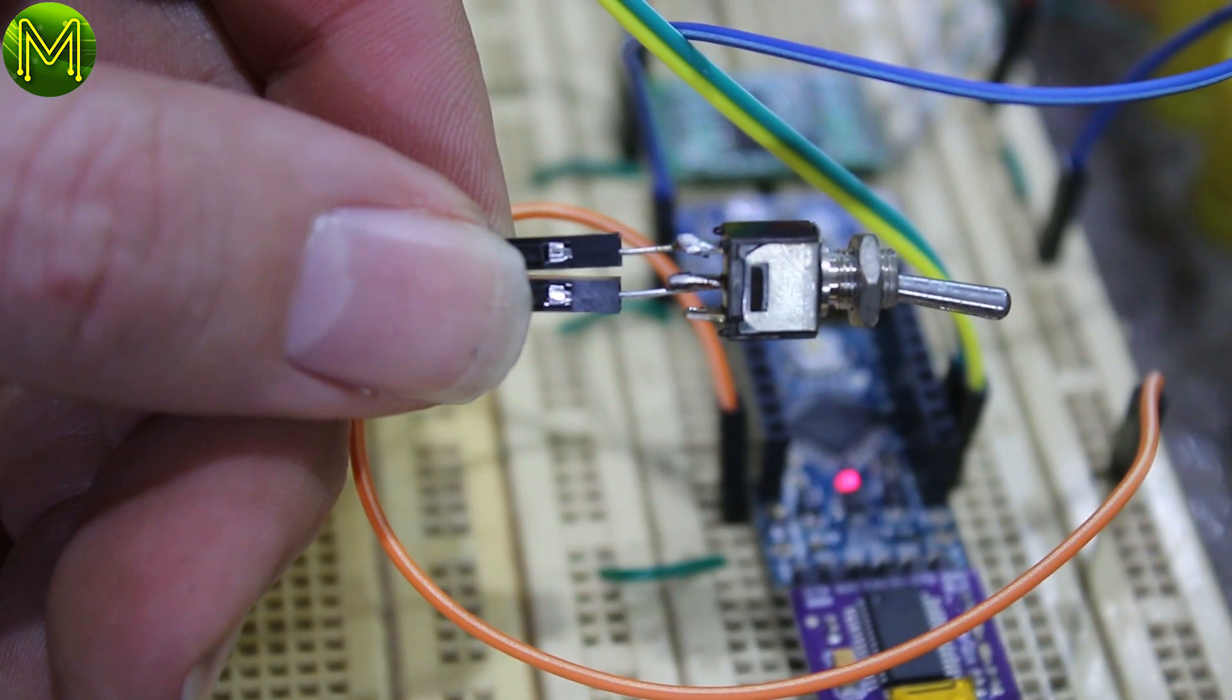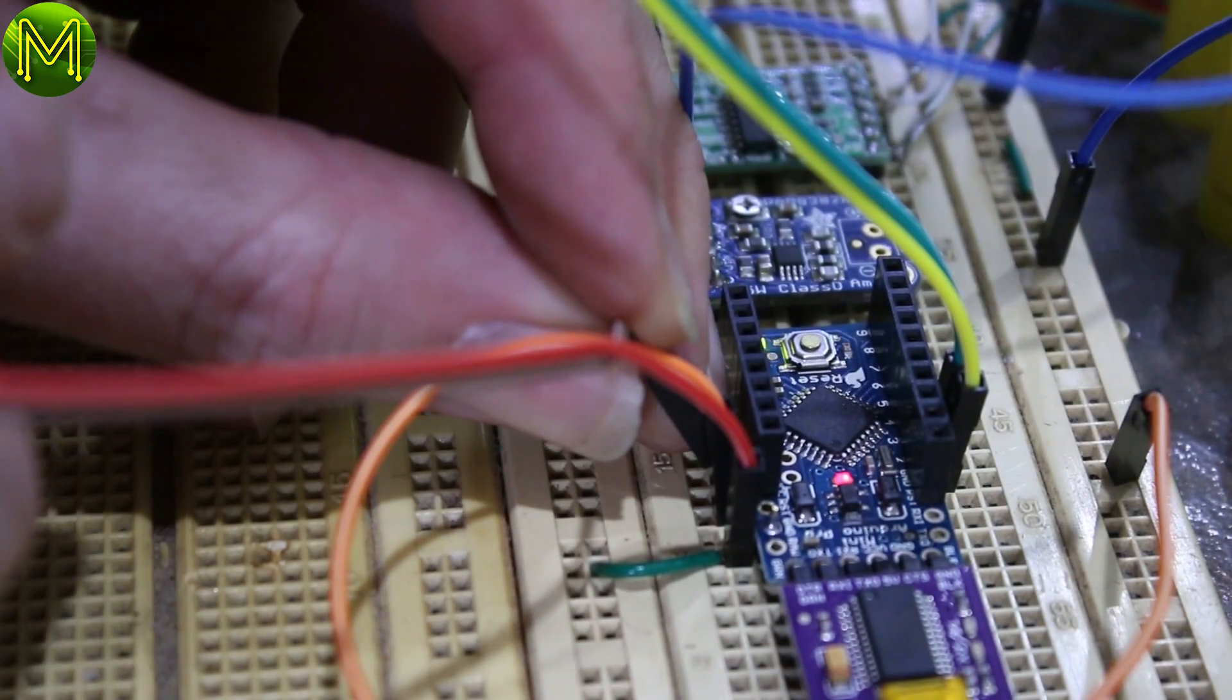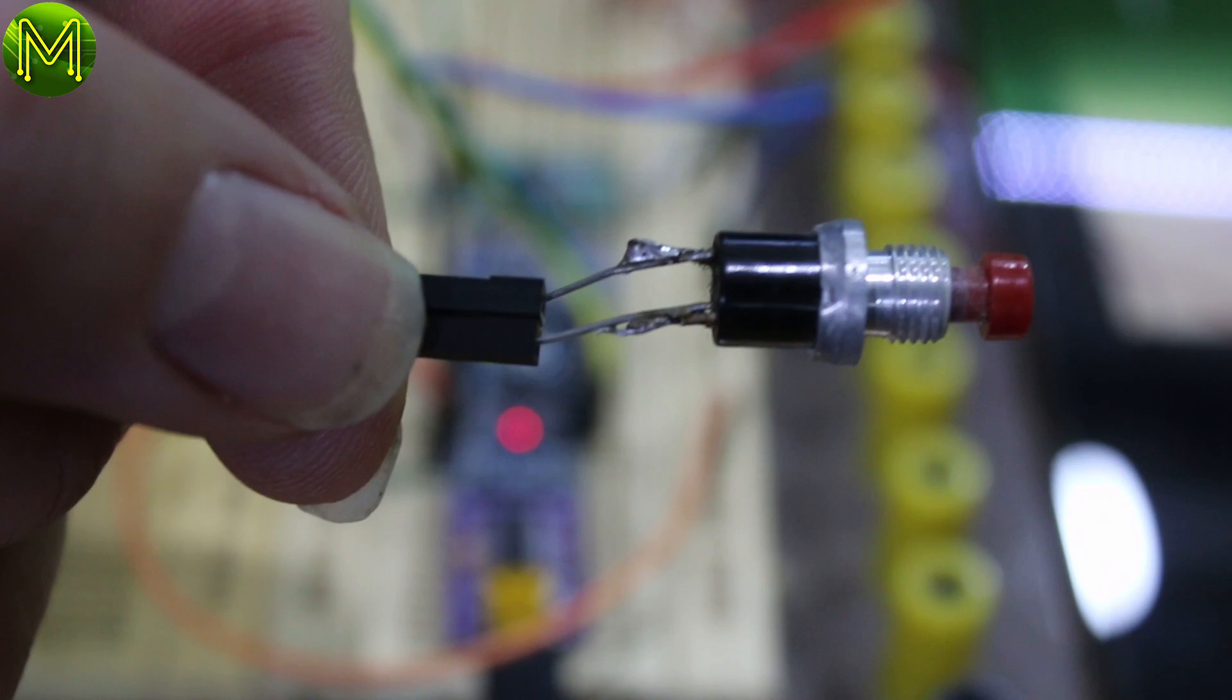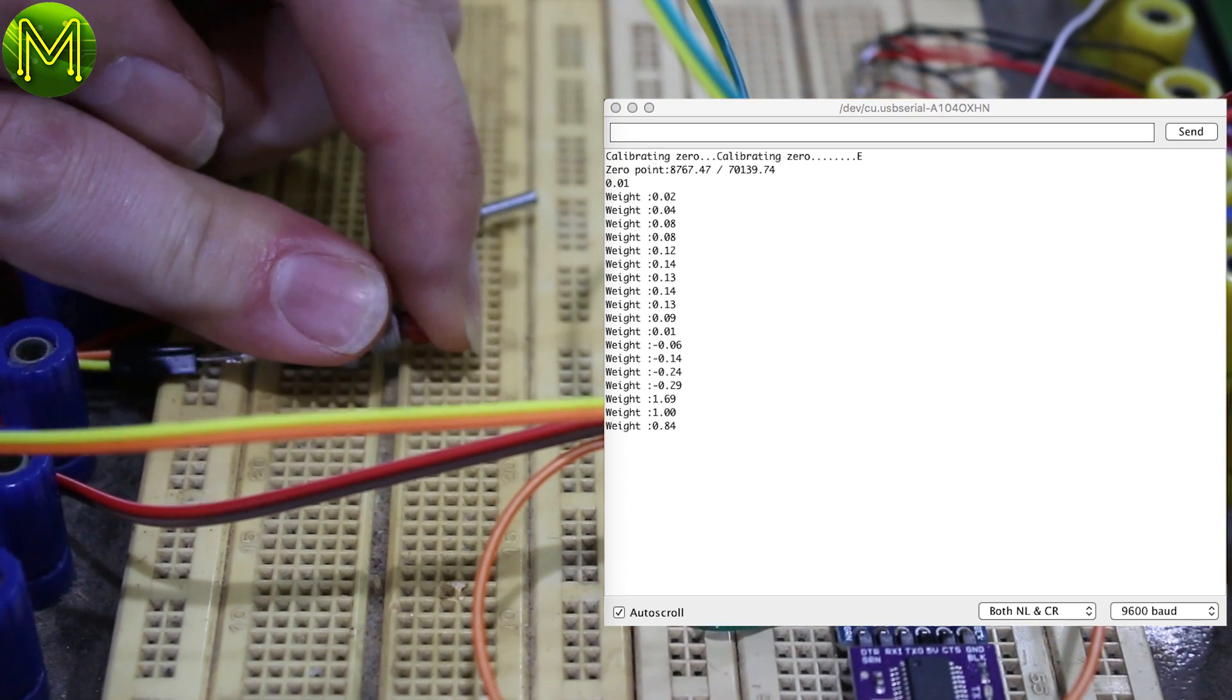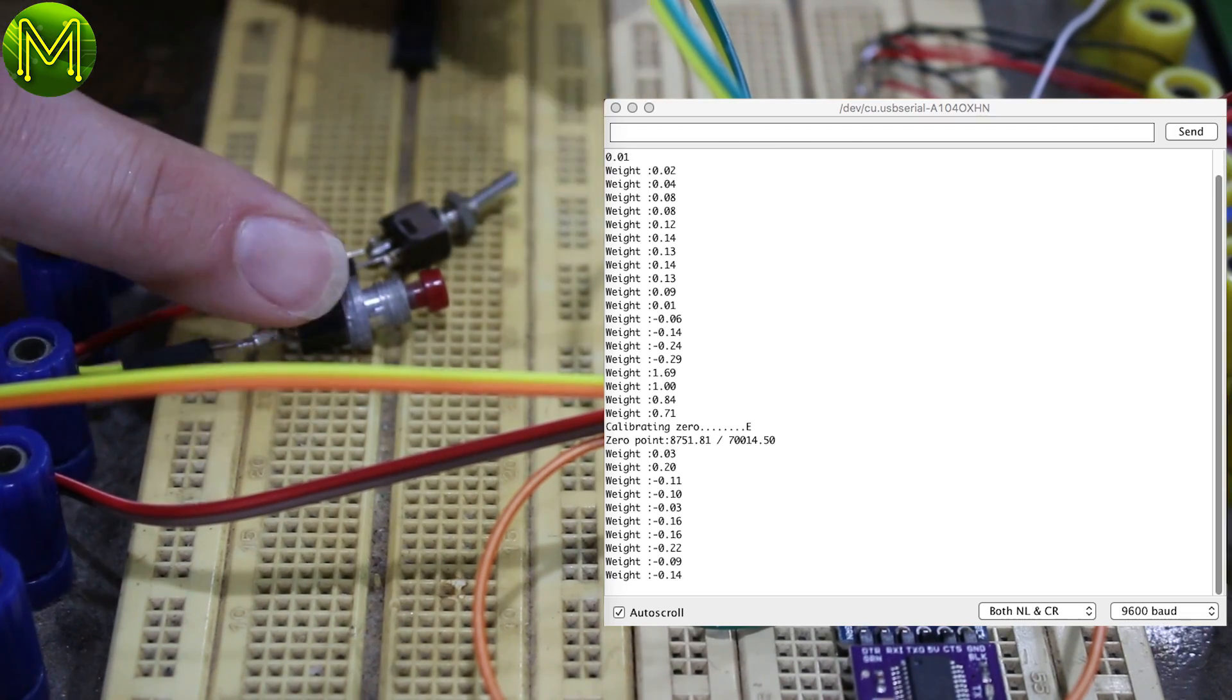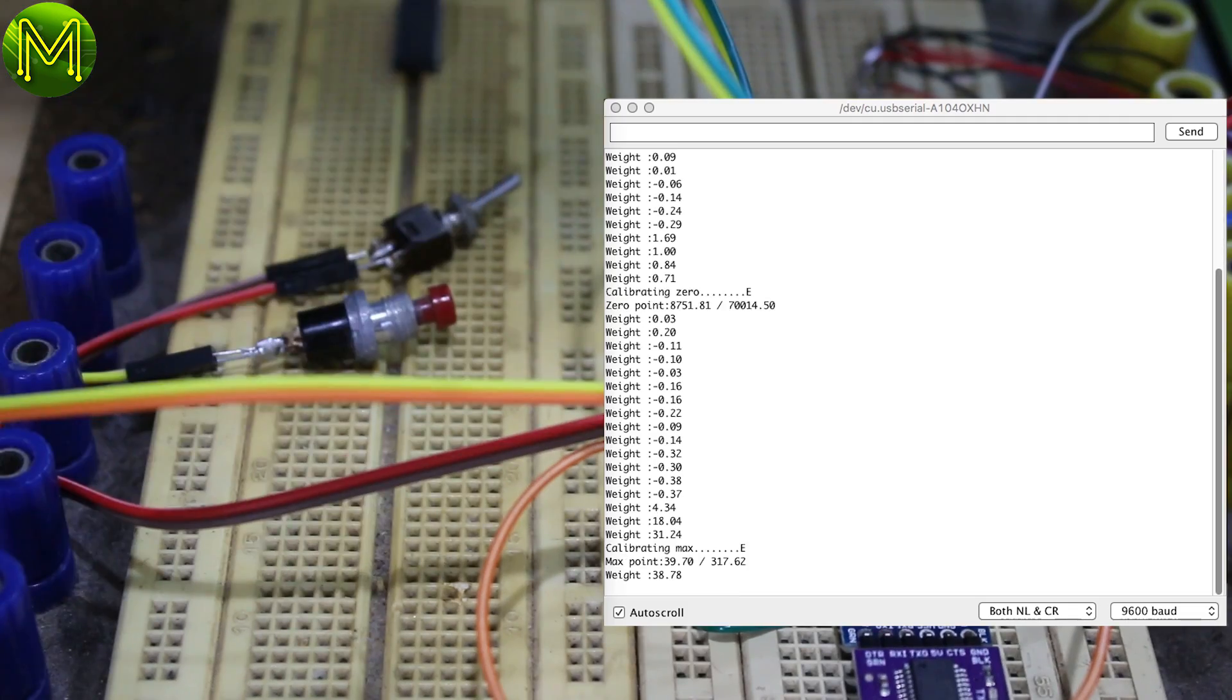The next step was to add some buttons as I'll need to be able to easily calibrate it when it's in the car. I attached one end to a spare input and the other end to ground using internal pull-ups. This will be used to select zero or maximum calibration points. Then added a button to select the calibration mode which was connected to another spare input. When the toggle switch is set in one position and I press the calibration button, it will set the zero point. And when I move the toggle switch to the other position and press the calibration button again, it will set the maximum point. Simple.